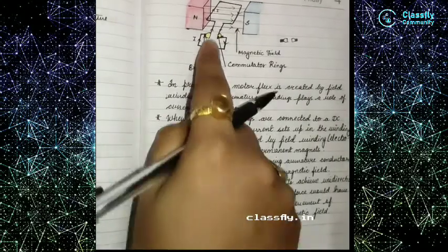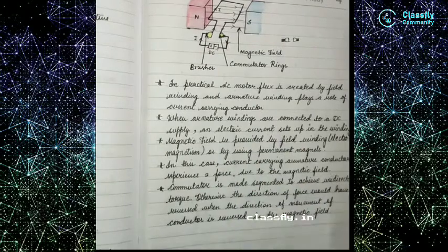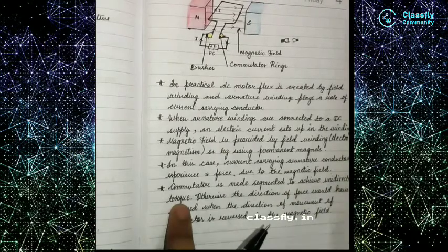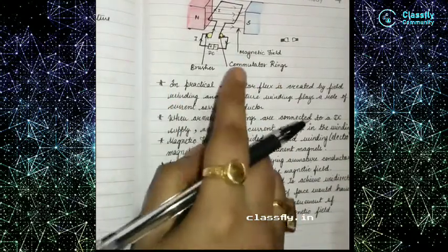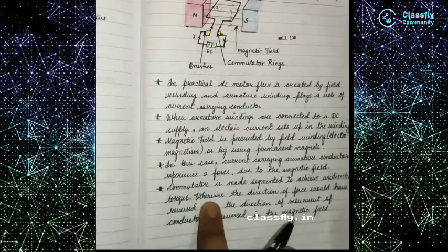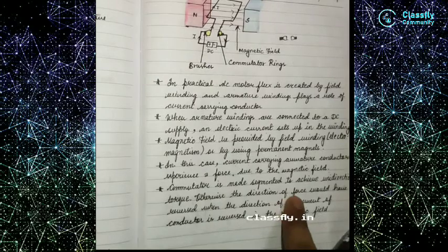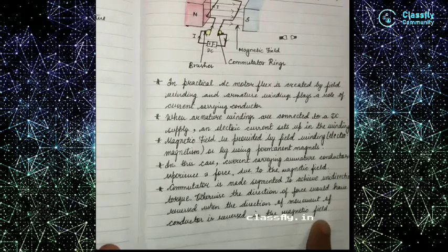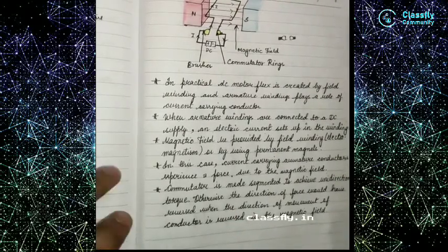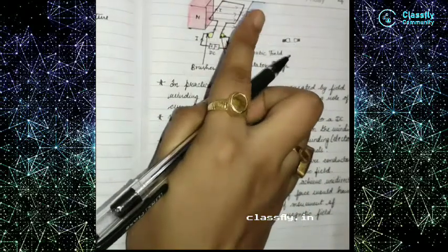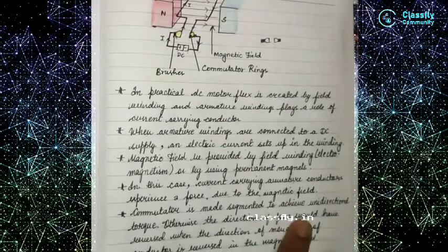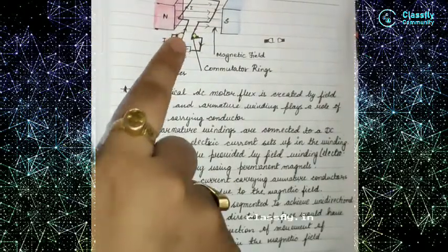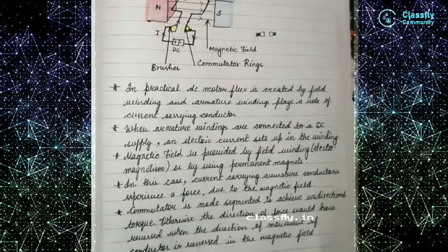The commutator is made segmented to achieve unidirectional torque. Without it, the direction of force would reverse whenever the direction of movement of the conductor is reversed in the magnetic field. The commutator ensures the torque direction remains consistent during rotation.